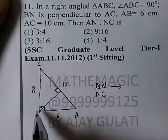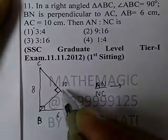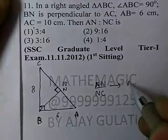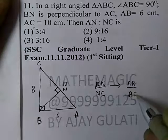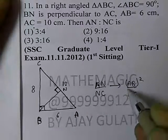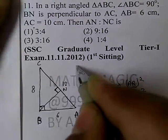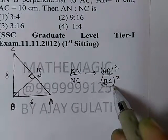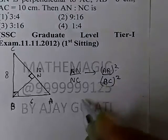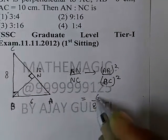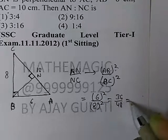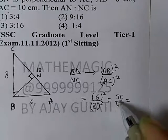AN is to NC — as I proved earlier in the theory, if N is the foot of the perpendicular, then AN to NC equals AB squared upon BC squared. We have proved this earlier. So AN to NC equals AB squared upon BC squared. AB is 6, BC is 8, so that gives us 6 squared over 8 squared, which is 36 over 64.